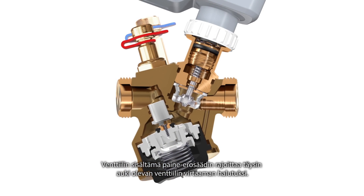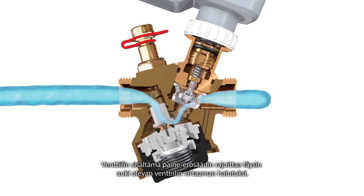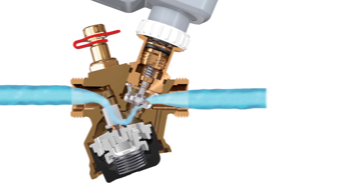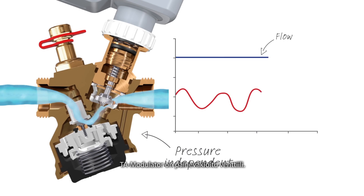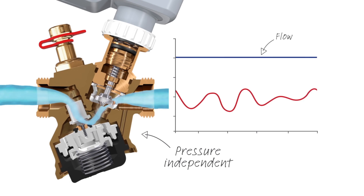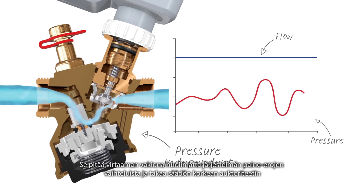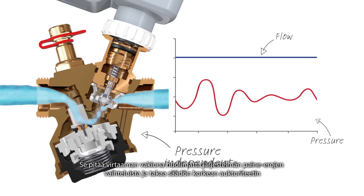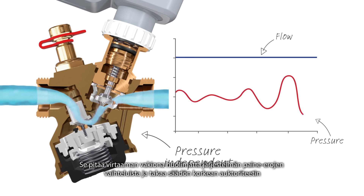The built-in pressure controller limits the maximal flow through the valve when the actuator is fully open. TA modulator is a pressure-independent valve — it keeps the flow constant regardless of pressure fluctuations in the system and guarantees high control authority.